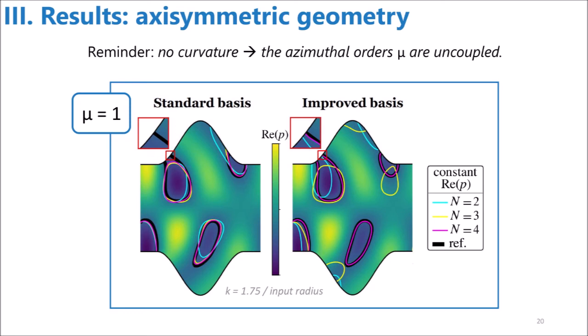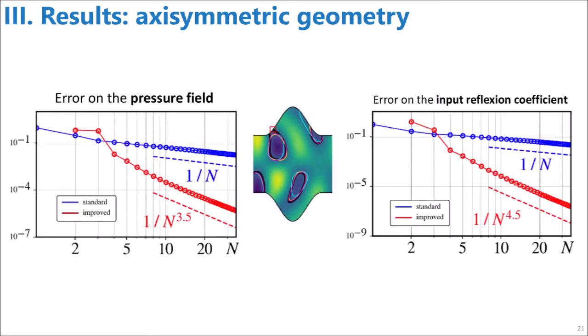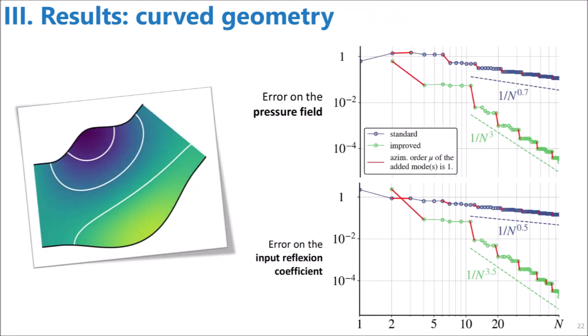And you can see with the colored isobars that increasing the number of modes from 2 to 4 brings us closer to the solution. But if we zoom in on the boundary, we can see that the boundary condition is poorly satisfied with 4 modes of the standard basis, while it is much better satisfied with 4 modes of the improved basis. And this has a significant impact on the convergence as we can see here on this graph representing the error on the pressure field on the left and the error on the input reflection coefficient against the number of modes on the right. If you wonder, the error on the pressure field is obtained by integrating the absolute difference between the pressure field with few modes and the reference pressure field.